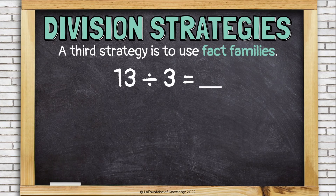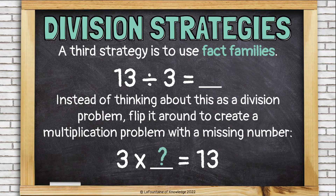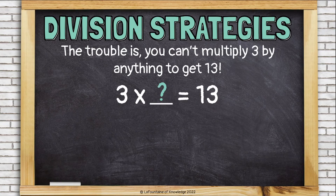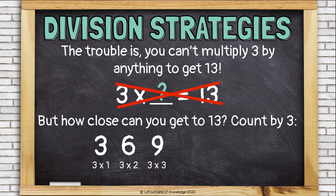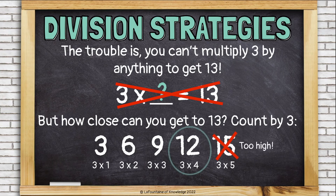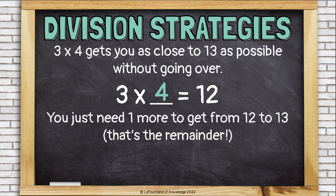We can also use fact families, but it's a little trickier. Instead of thinking of 13 divided by 3, think of it as 3 times what equals 13? The trouble is, you can't multiply 3 by anything to get exactly 13. But how close can you get? Count by 3: 3×1=3, 3×2=6, 3×3=9, 3×4=12, 3×5=15 — that's too high. So 3 times 4 is 12, as close as we can get to 13 without going over. I just need 1 more to get from 12 to 13 — that's the remainder.